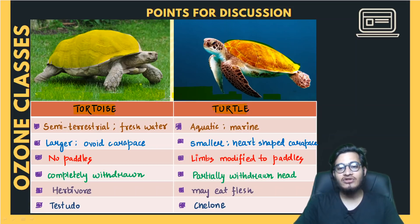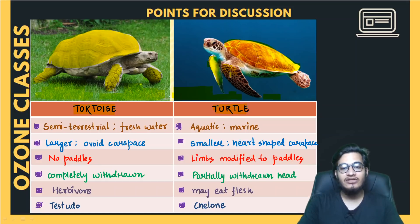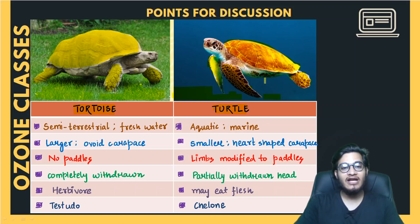Since the tortoise lives on land, its limbs are not modified into paddles — they are only used for walking, because it has to spend its entire life on land. So its front and hind legs are used for walking. But in the case of a turtle, these limbs are modified into paddles used for swimming. So the four front limbs and hind limbs behave like paddles and are used for swimming.